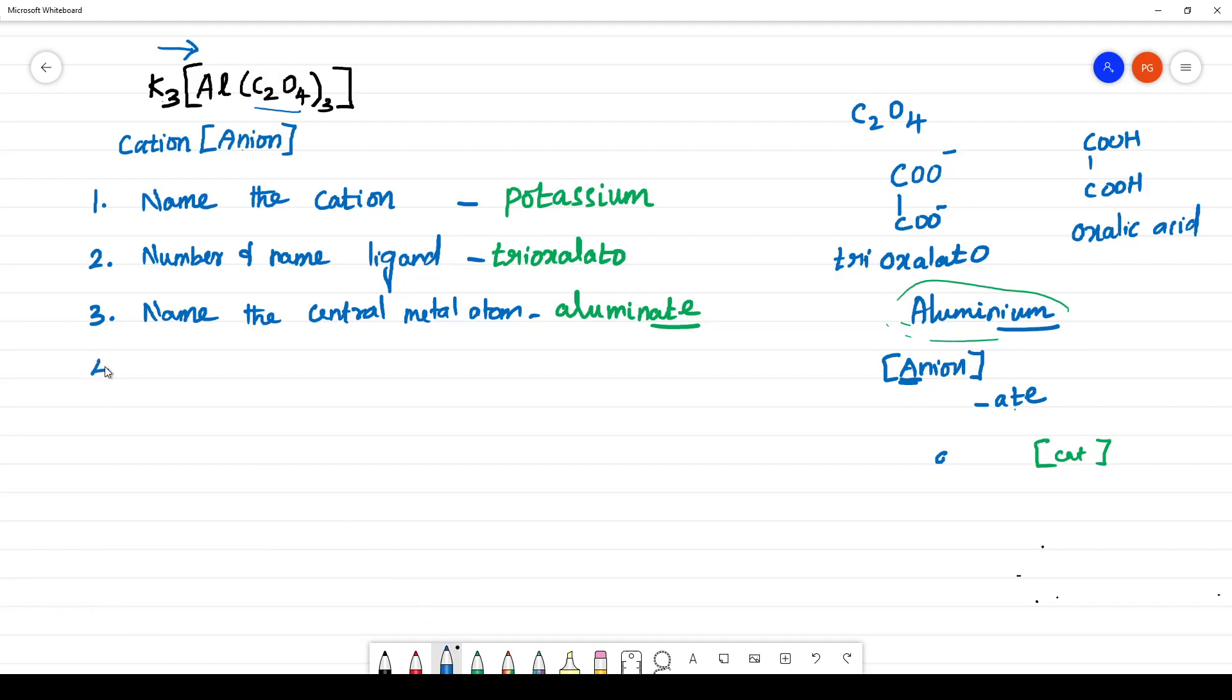Finally, what you have to do? You have to calculate the oxidation state. Oxidation state of central atom. How to calculate? K3 is 3 into K. You know the charge is 1 plus. Al, let us take it as x, plus 3 into... how many negative charges are there? 1 and 2. So what is the charge of the oxalato ligand? It is minus 2.